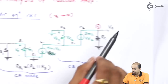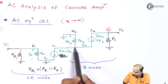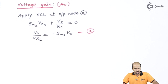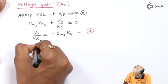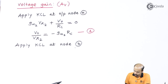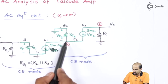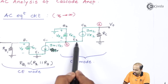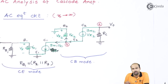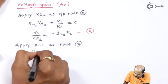We have started from vo and reached vπ2. Now we move to the next part — applying KCL at node B. At node B, the first current comes from gm1·vπ1, the second current flows towards ground through rπ2, and the third current is incoming. Incoming current equals outgoing currents.